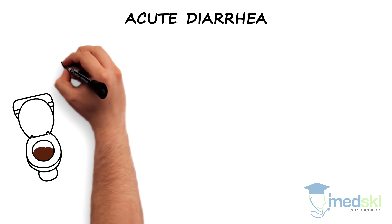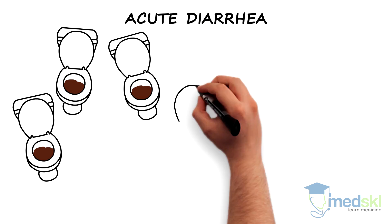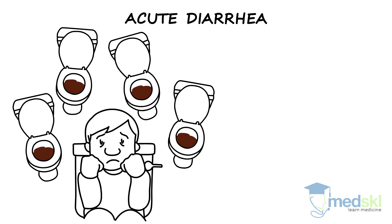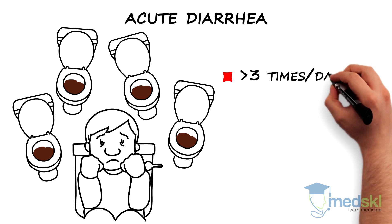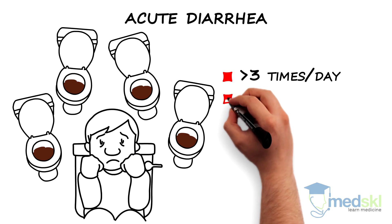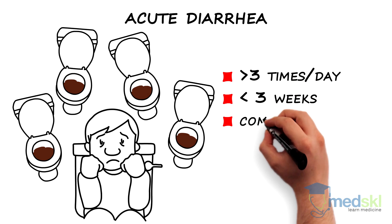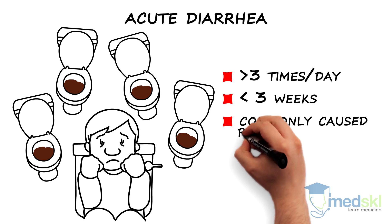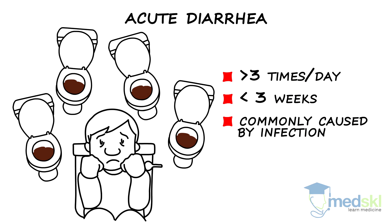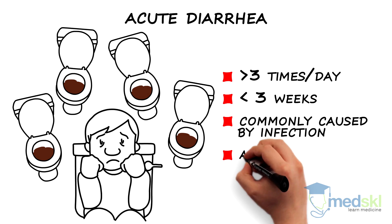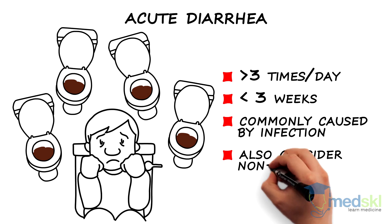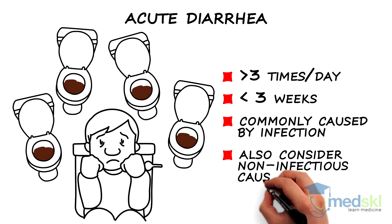Acute diarrhea is the passage of frequent, unformed stool more than three times a day for less than three weeks. It is most commonly caused by infections, but non-infectious causes must also be considered.